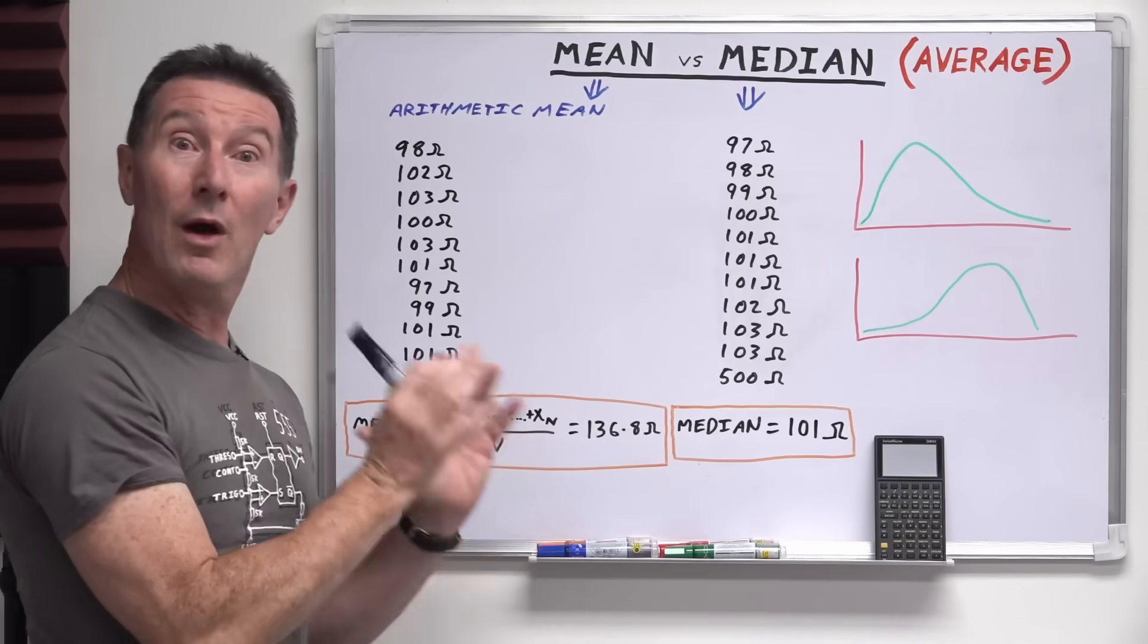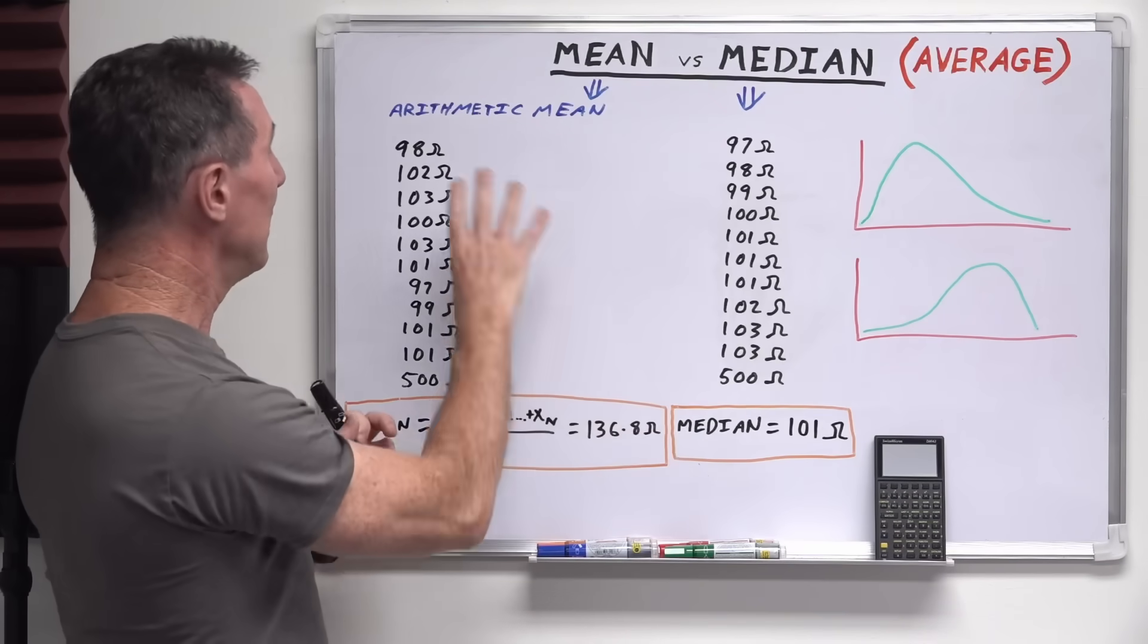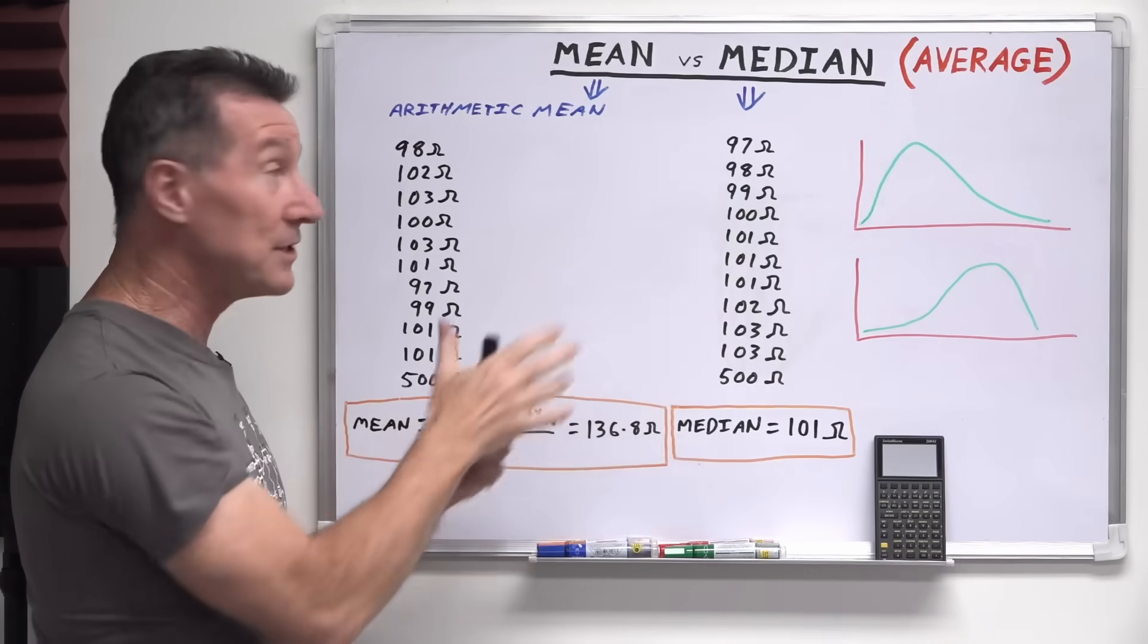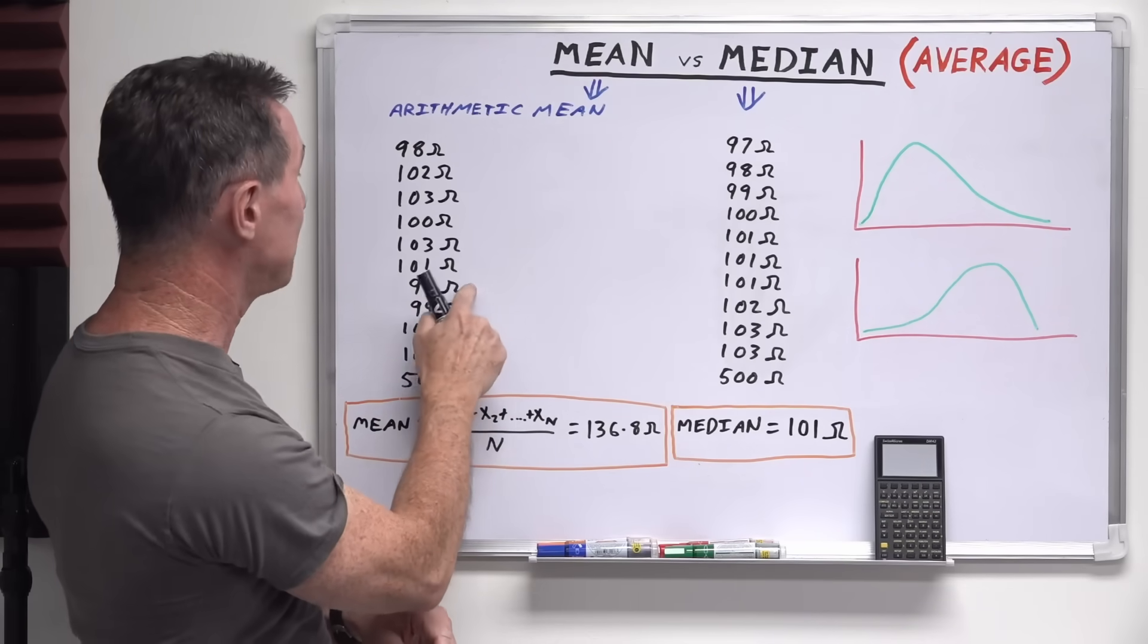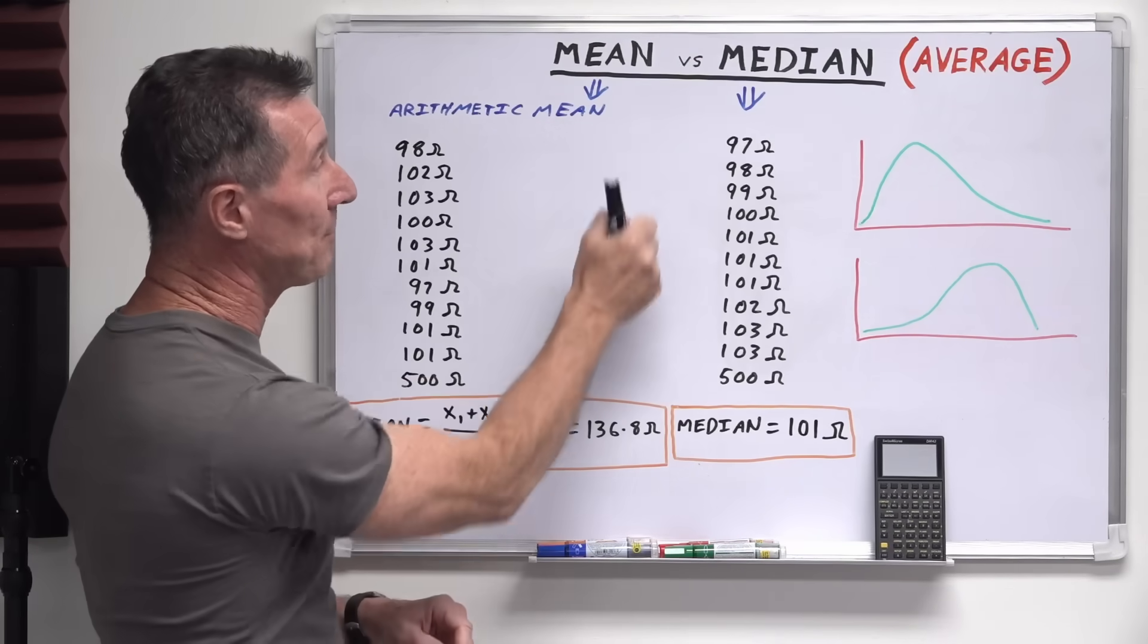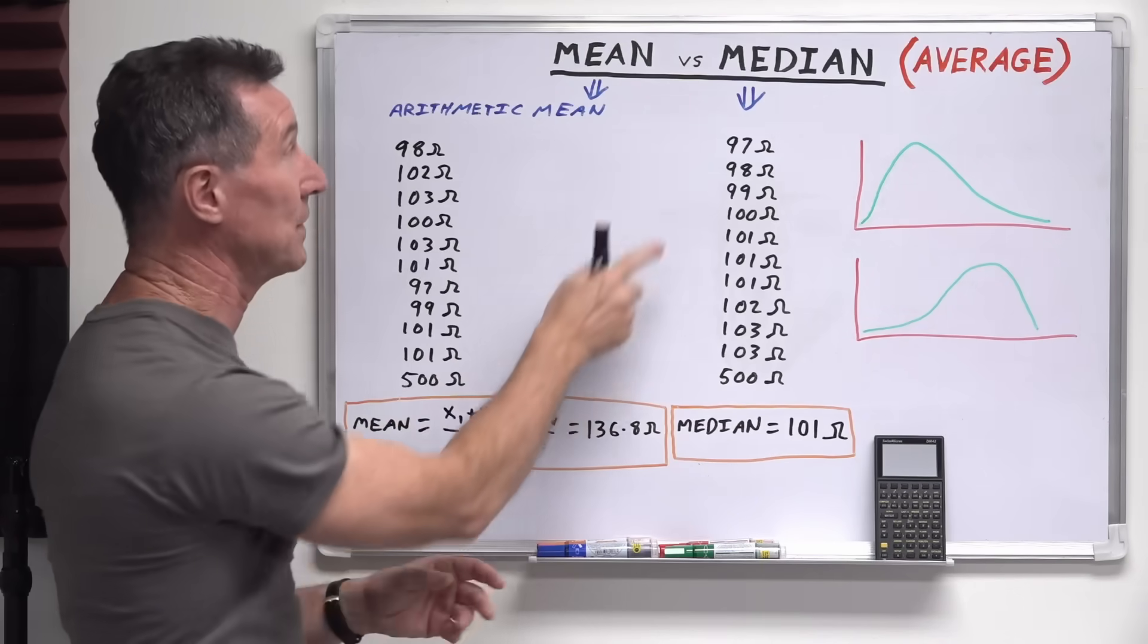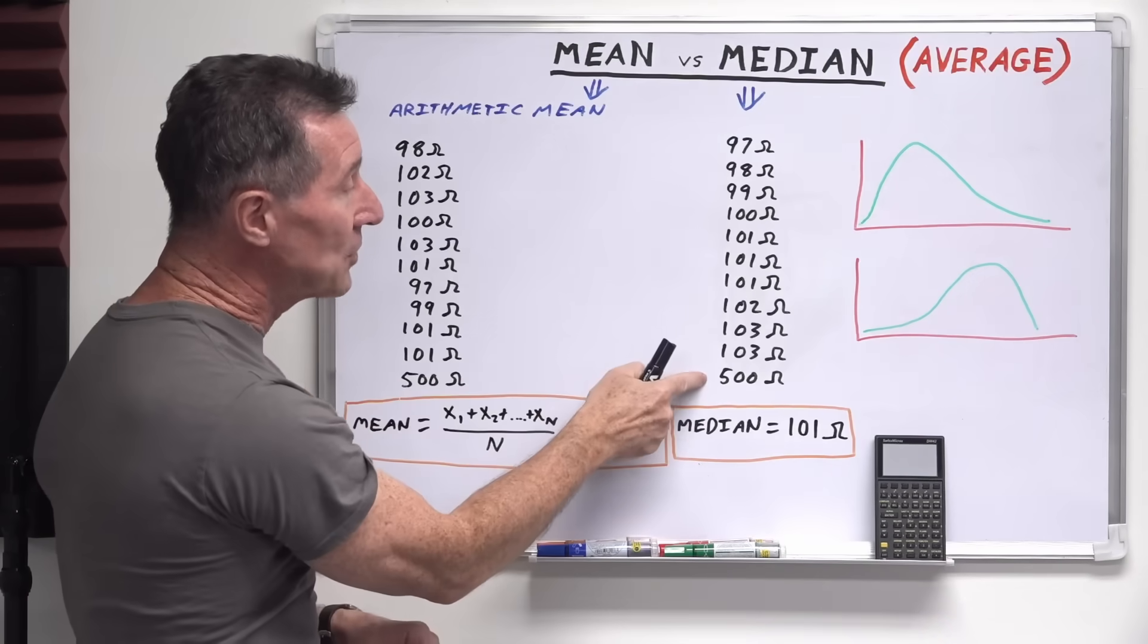So how does median work? Well, it's very simple. All we've got to do is take our data and just sort it. So it's a sorted data set now. At 97 we get our lowest value, we'll put that up the top here. Top or bottom doesn't matter which direction you sort it, as long as it's sorted.